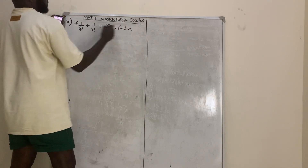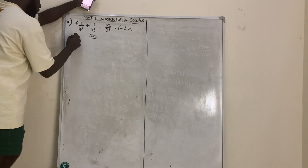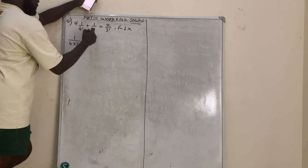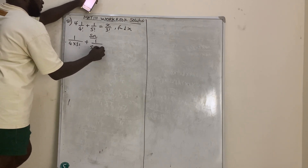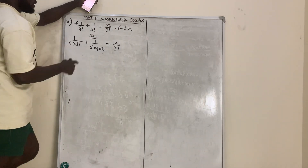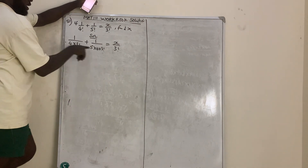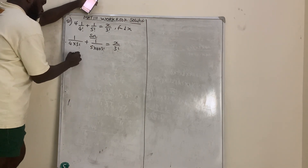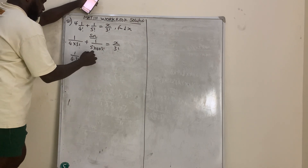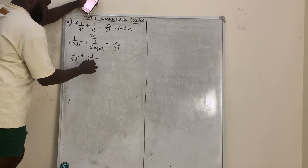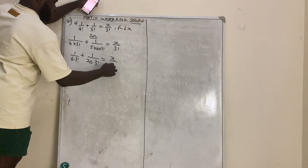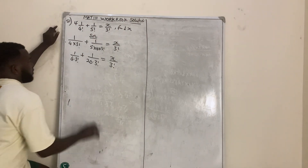This is a very simple question. We know that 4 factorial means 4 times 3 factorial, plus 5 factorial means 5 times 4 times 3 factorial, all equal to x over 3 factorial. I want them all to be in terms of 3 factorial. So I have 1 over 4 dot 3 factorial plus 1 over 20 dot 3 factorial, equal to x over 3 factorial.